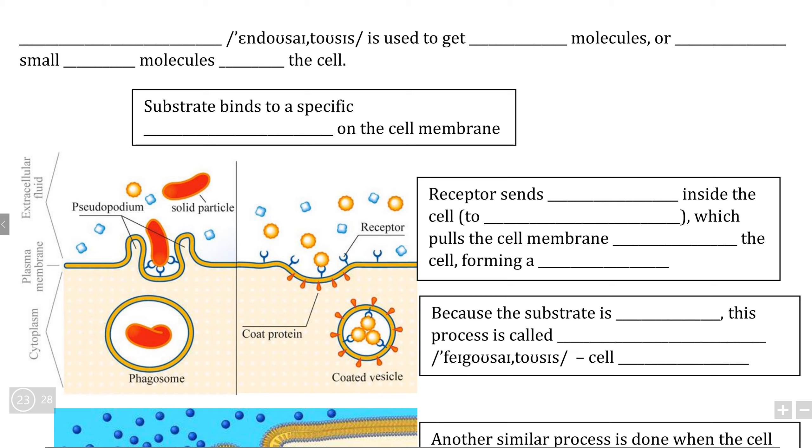In part two of our series on advanced methods of membrane transportation, we're going to start by looking at a process called endocytosis, which as we can see from these two diagrams here